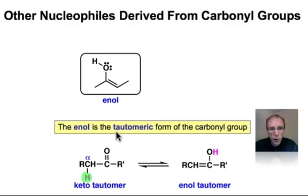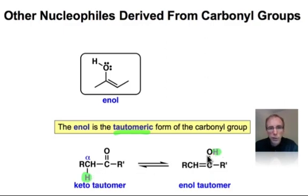We call this a tautomeric form, and by tautomer we mean simply we're going to switch the position of a hydrogen here from carbon to oxygen, and we're going to switch the position simultaneously of a double bond. The carbon-oxygen double bond moves over to make a carbon-carbon double bond.